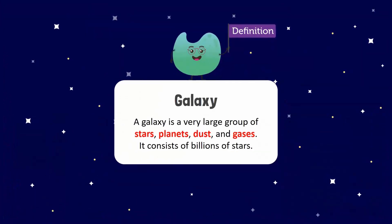A galaxy is a very large group of stars, planets, dust, and gases. It consists of billions of stars.